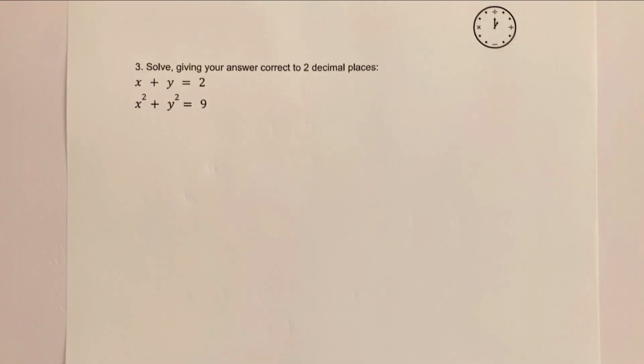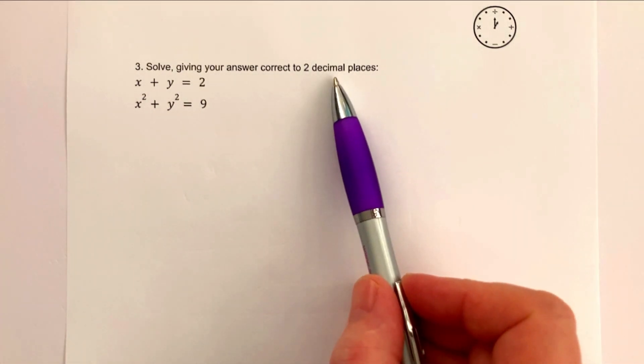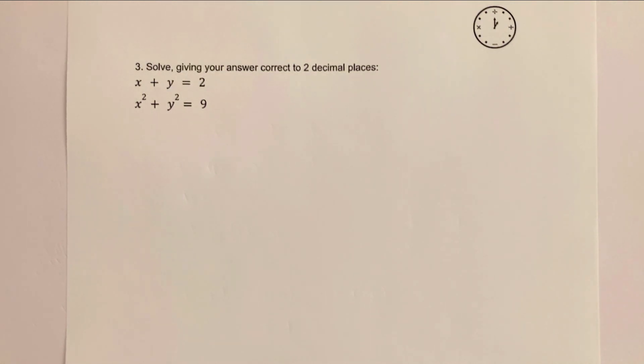Okay, so a slight change of pace now where we're on to question number three. Now you'll notice it says give your answer correct to two decimal places. So what that indicates is that we need to actually use the quadratic formula or completing the square in order to complete this particular one.